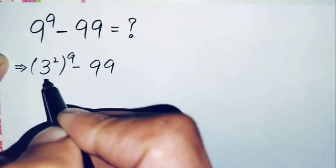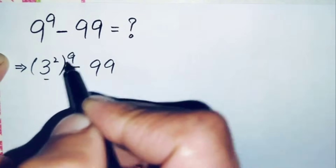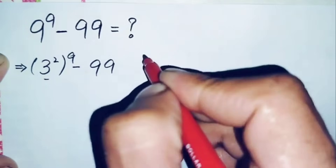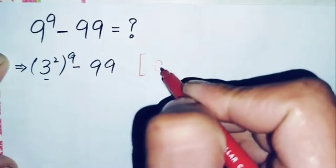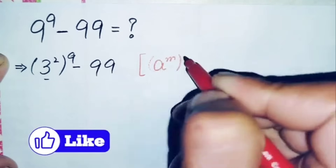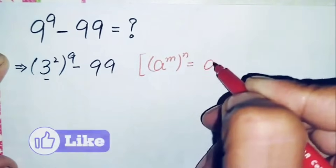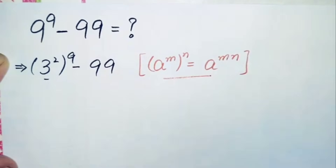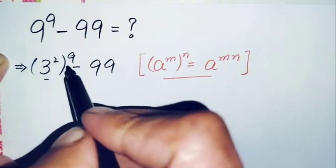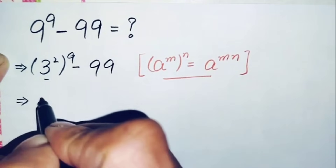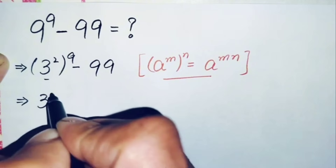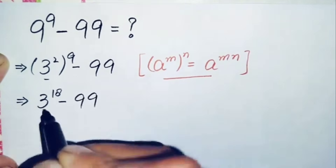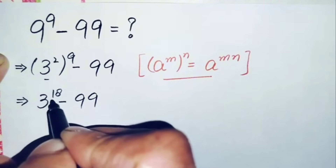Here we will use an exponential math property: r raised to power m, raised to power n, equals r raised to power m times n. Using this property, we multiply the powers with each other, so this becomes 3 raised to the power 2 times 9, which is 18, giving us 3^18 minus 99.